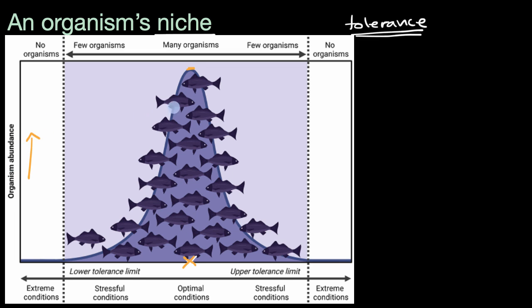The vertical dimension here represents organism abundance — you're going to see a lot of them at optimal conditions. Now if the water got warmer and warmer, it becomes less and less comfortable for that fish, so we go from optimal to stressful conditions, and you have fewer fish. At super hot, extreme conditions, you're not going to get any of those fish. And going the other way — colder and colder — you reach the lower end of the tolerance limit, and if cold enough, you simply cannot find fish in that environment.